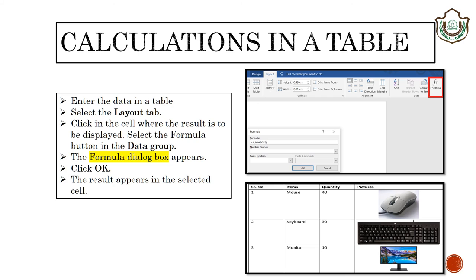We can perform calculations on the numeric data entered in a table. For this, you just need to enter the data in a table. Select the layout tab. Then click in the cell where the result is to be displayed. Select the formula button in the data group. Then click on formula dialog box and click OK. The result appears in the selected cell.